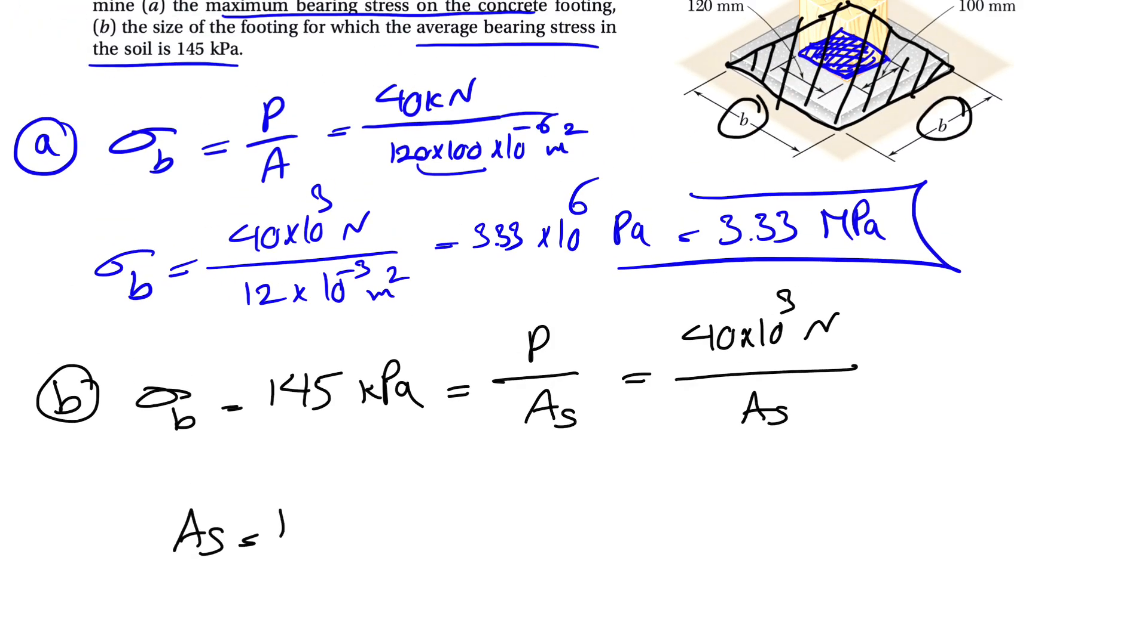And this will be equal to P over stress. So the P is 40 kilonewtons, again, 40 times 10 to the 3 over 145 times 10 to the 3 to get it in Pascals.